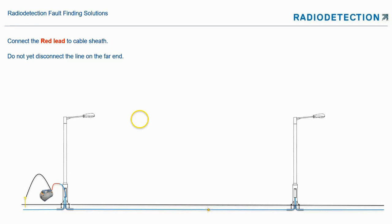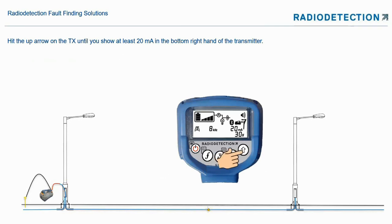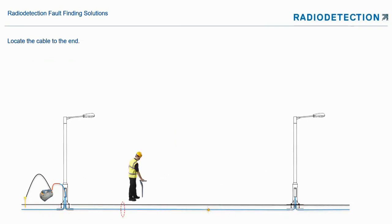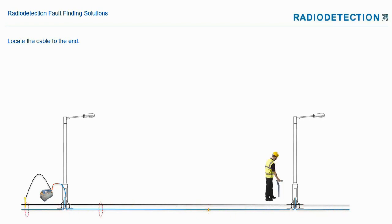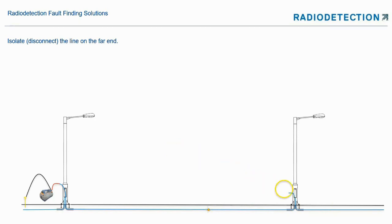Connect the red lead to the cable sheath — here we've gone inside the lamp column and connected that to the cable sheath. Don't disconnect at the far end yet. Locate the cable to the end to make sure we're searching on the right line. Now isolate — disconnect the cable at the far end. Now this cable is what we call floating; it's completely disconnected, so the only path to earth is now through the damage.